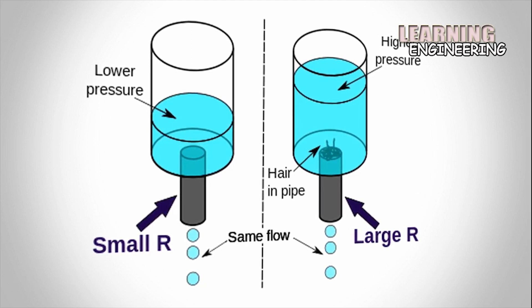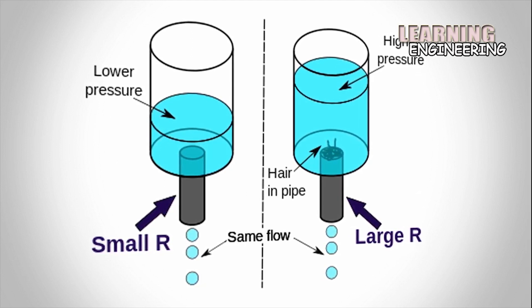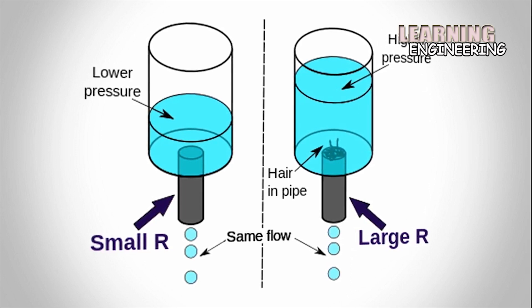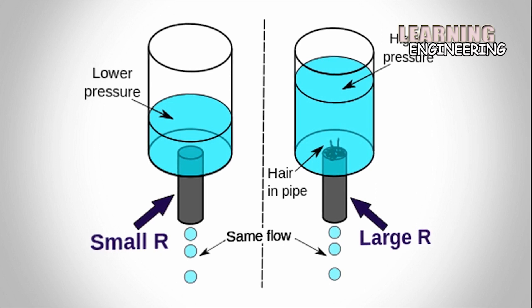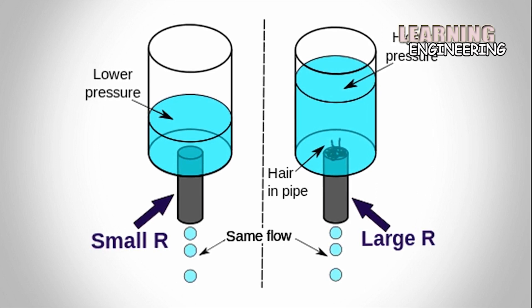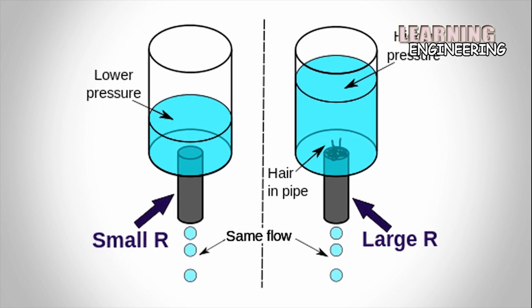When a pipe is clogged with hair, it takes a large pressure to achieve the same flow of water. Pushing electric current through a large resistance is like pushing water through a pipe clogged with hair. It requires a larger push to drive the same flow.